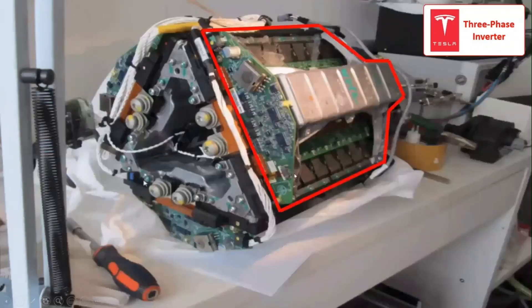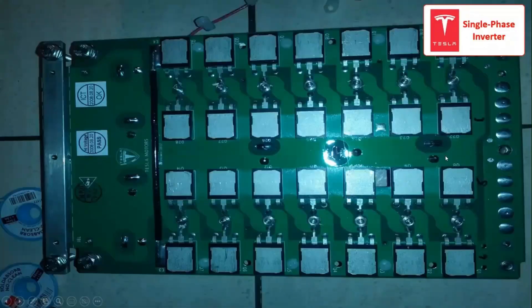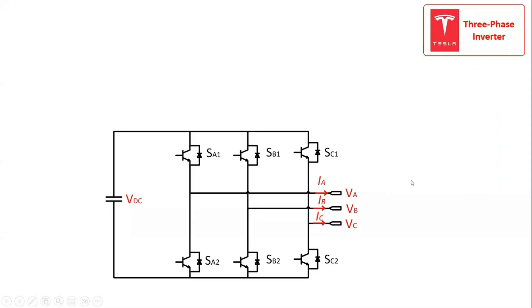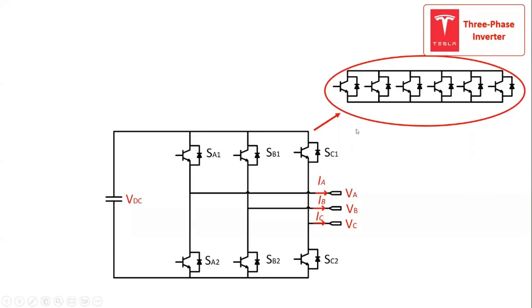The conventional three-phase two-level inverter consists of a DC-link voltage and six switching power semiconductor devices. In this case, a conventional two-level inverter structure with six IGBTs paralleled per switching device to handle the high current.